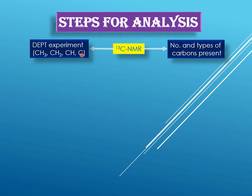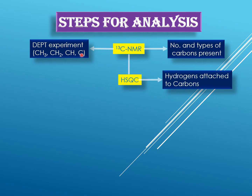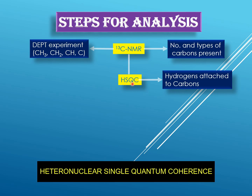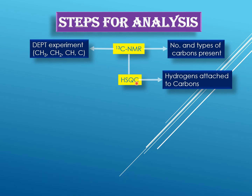Now we know the hydrogens and carbons present in the molecule; the next step is to connect them. To find out which hydrogens are connected to which carbon atoms, we go to HSQC — Heteronuclear Single Quantum Coherence — which is a two-dimensional NMR technique. It shows correlation between hydrogens and carbons, giving you information about which hydrogens are attached to which carbons.